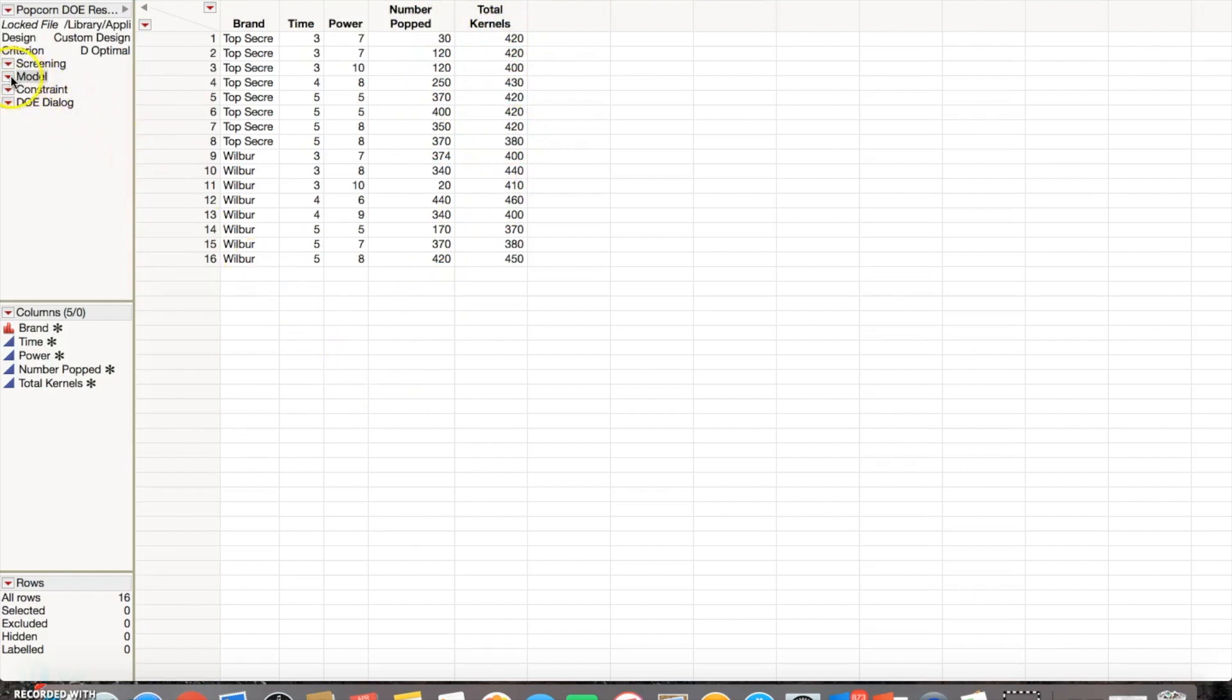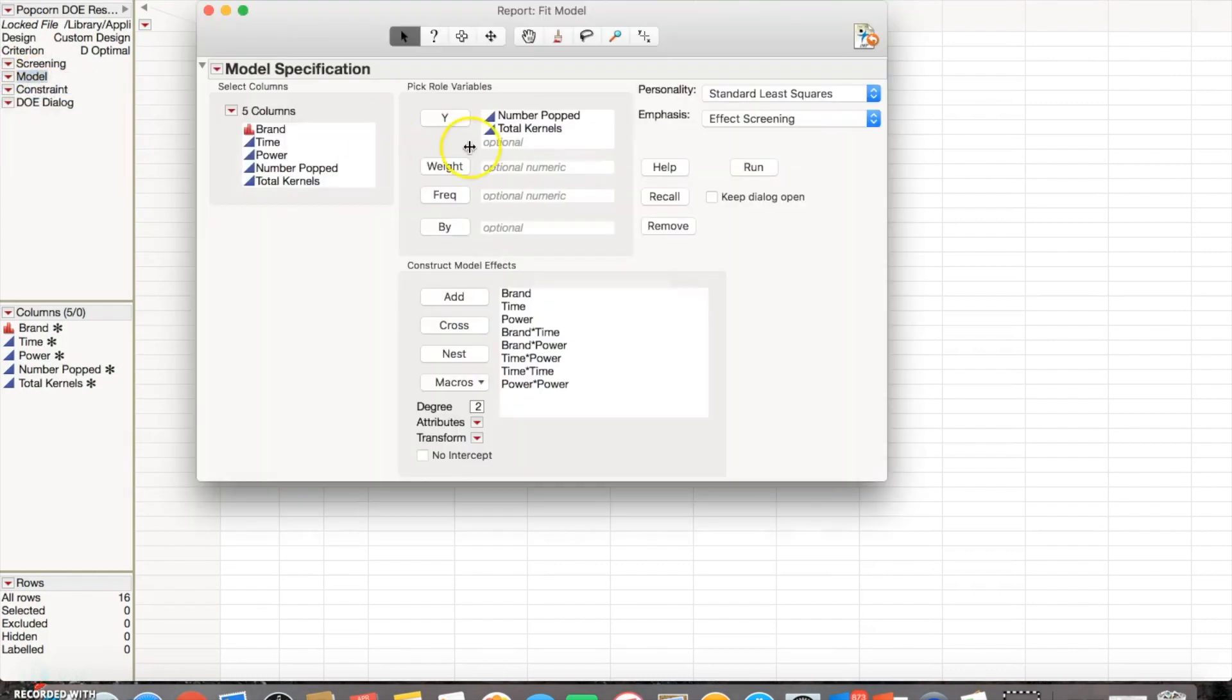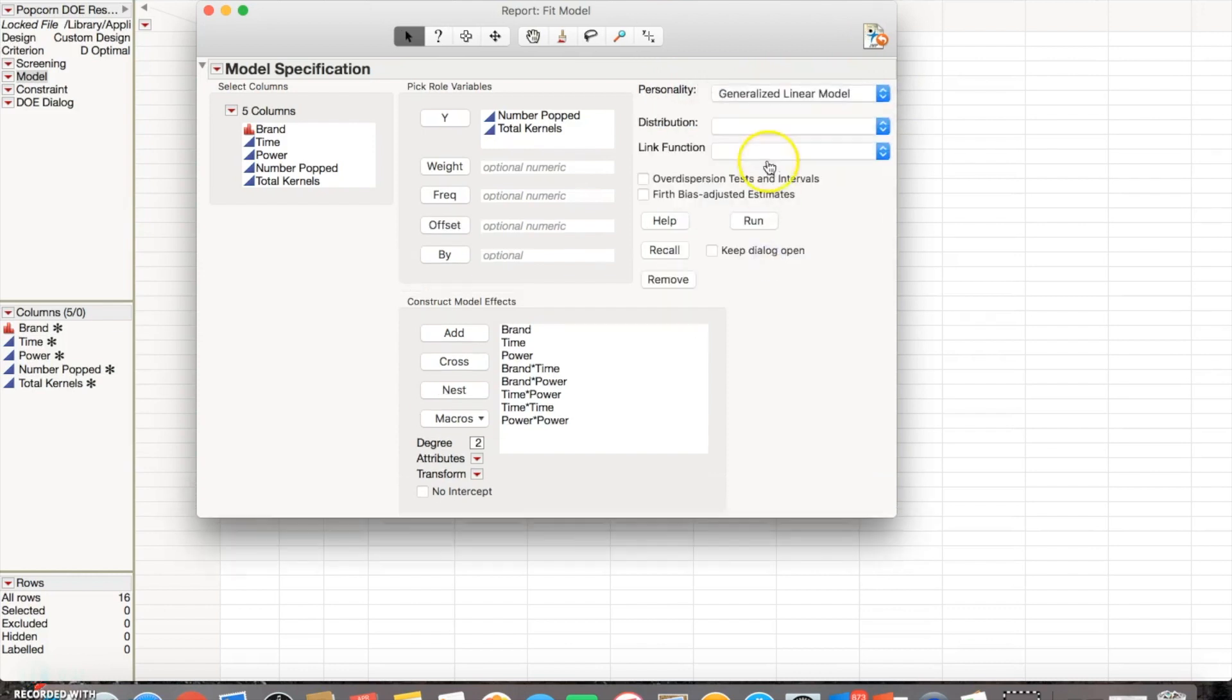An easy way to look at the model already set up inside JMP is to click on this red arrow where it says model and then run script. It already has everything put in there. But one thing we want to change is right here in the personality—we want to click on the generalized linear model, as Courtney said earlier, and then we're looking at binomial. So I'm going to click run.